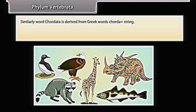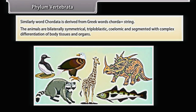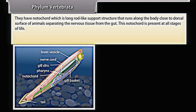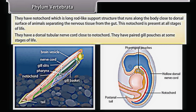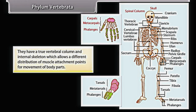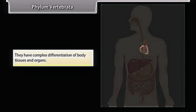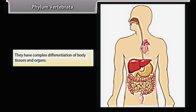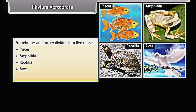Vertebrata is derived from 'chorda' (string). The animals are bilaterally symmetrical, triploblastic, coelomic, and segmented with complex differentiation of body tissues and organs. They have a notochord running close to the dorsal surface, present at all stages of life. They have a dorsal tubular nerve cord close to the notochord, paired gill pouches at some stages, and a true vertebral column with internal skeleton allowing different distribution of muscle attachment points. Vertebrates are further divided into five classes: Pisces, Amphibia, Reptilia, Aves, and Mammalia.